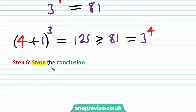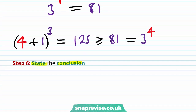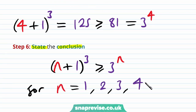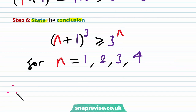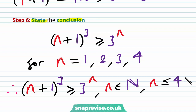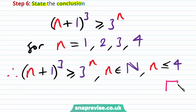Our conclusion is that (n+1)³ ≥ 3ⁿ. In particular, we have shown this for n = 1, 2, 3, and 4. Therefore we can deduce that the inequality (n+1)³ ≥ 3ⁿ holds for all n in the natural numbers with n ≤ 4. Therefore we have proven our conjecture.